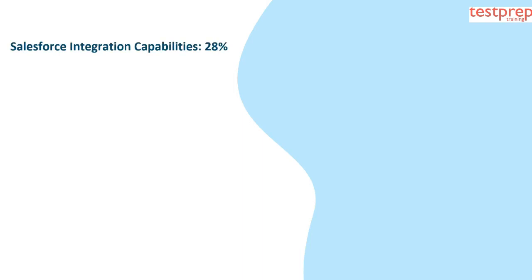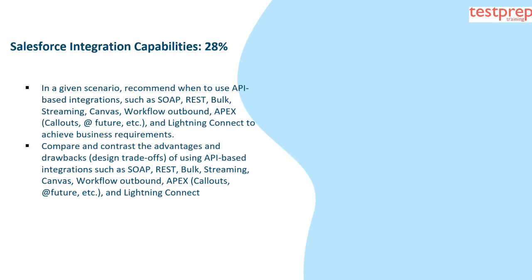Number 1, Salesforce Integration Capabilities, 28%. It contains: first, in a given scenario, recommend when to use API-based integrations, such as SOAP, REST, Bulk, Streaming, Canvas, Workflow Outbound, Apex Callouts, AtFuture, etc., and Lightning Connect to achieve business requirements.